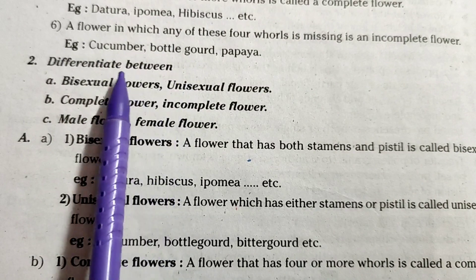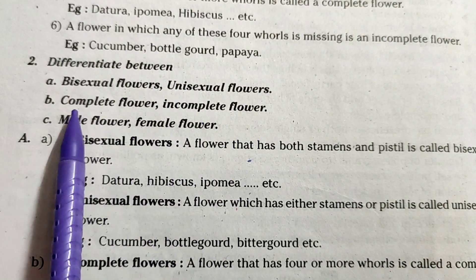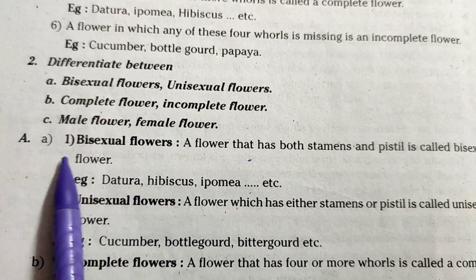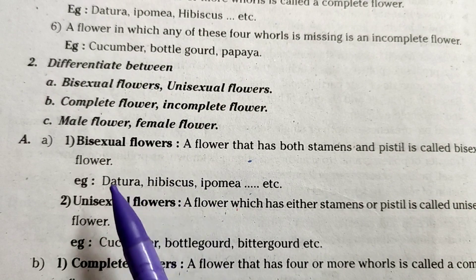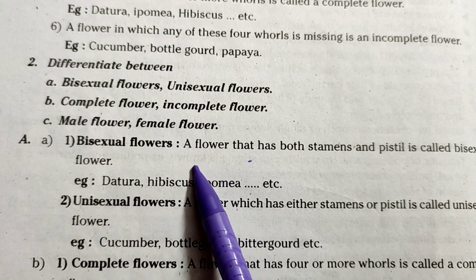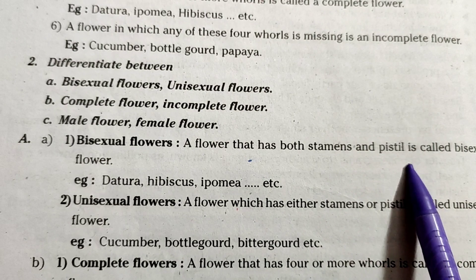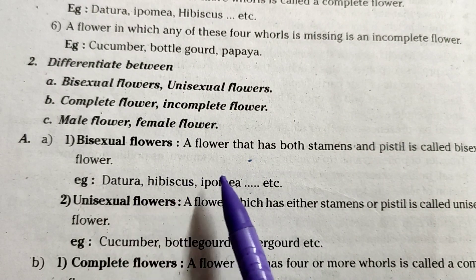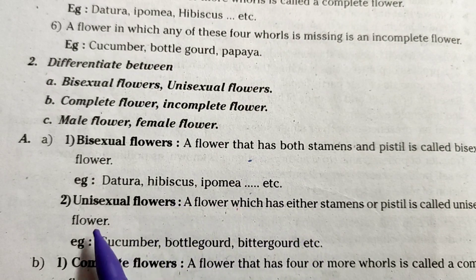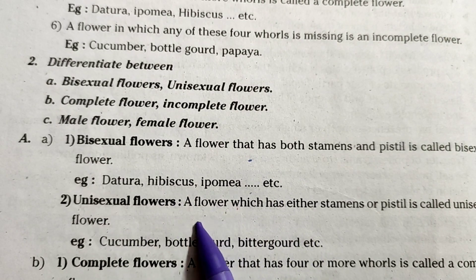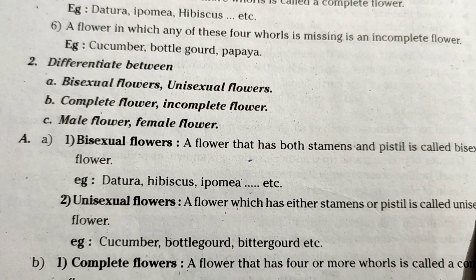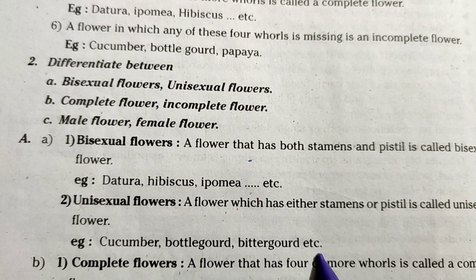Differentiate between bisexual and unisexual flowers, complete and incomplete flowers, and male and female flowers. Bisexual flower: a flower that has both stamens and pistil — examples: datura, hibiscus, ipomoea. Unisexual flower: a flower which has either stamens or pistil — examples: cucumber, bottle gourd, bitter gourd, etc.